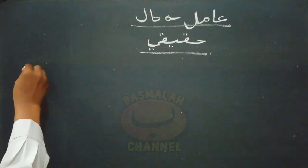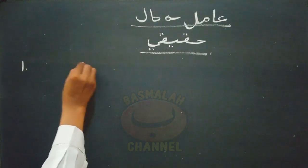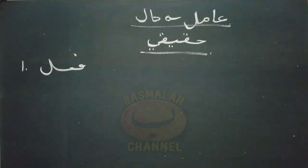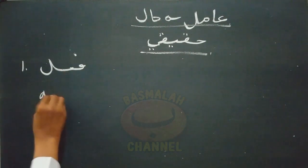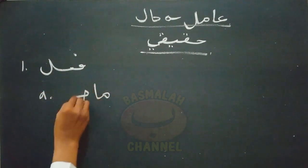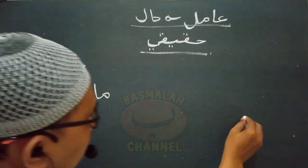Amil hal hakiki adalah amil-amil daripada hal yang tidak memerlukan penakwilan di dalam maknanya. Sementara amil hal maknawi adalah amil-amil daripada hal yang perlu adanya perkiraan makna agar maksud dari makna amil tersebut dapat difahami. Kita mulai dari amil hal yang masuk di dalam kategori hakiki. Yang pertama adalah berupa kalimat fi'il.